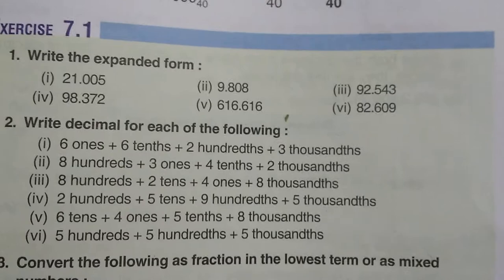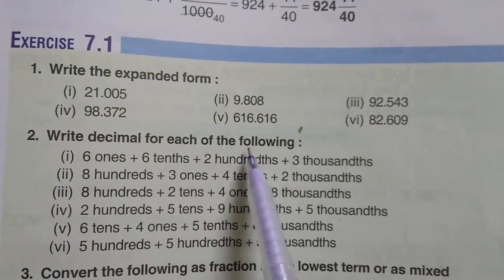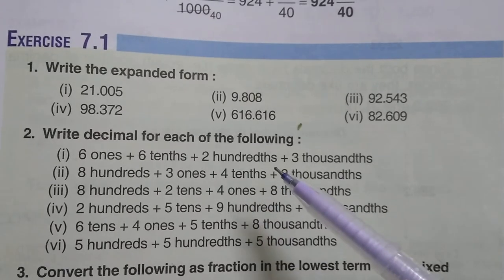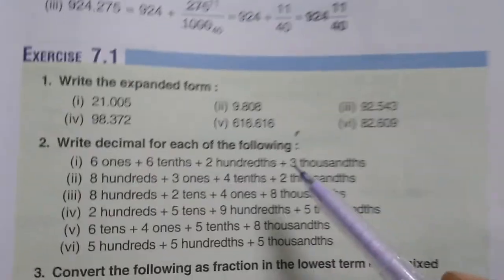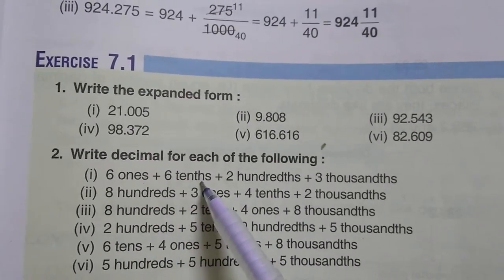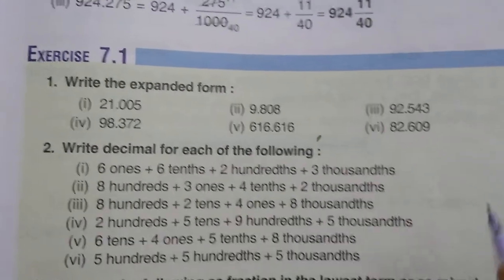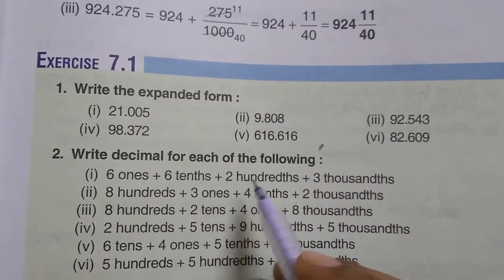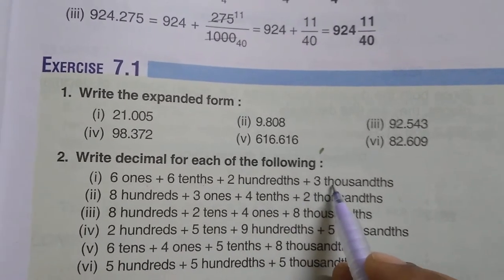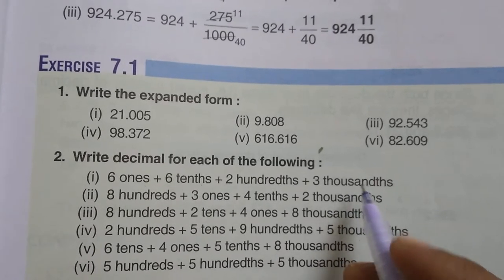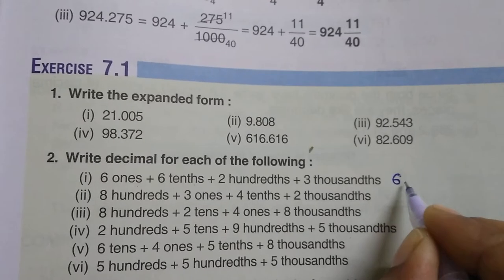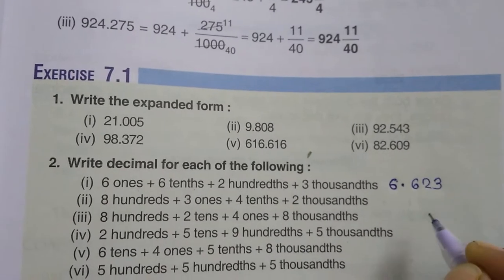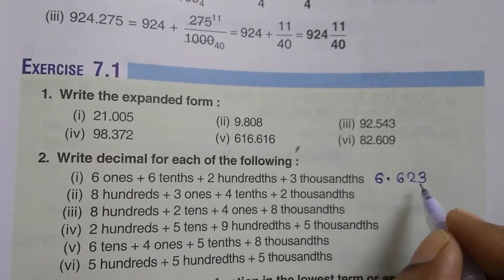Now let's look at question number 2: 'Write the decimal for each of the following.' Here we have to do just the opposite of question number 1. In question 1 we expanded; in question 2 we are given the expanded form and have to convert it back to decimal form. The first question has: six ones, six tenths, two hundredths, and three thousandths. Students, note that 'tenths' means the first digit after the decimal, 'hundredths' means the second, and 'thousandths' means the third. So: six is in the ones place, then decimal, then six, two, three. The answer is 6.623.